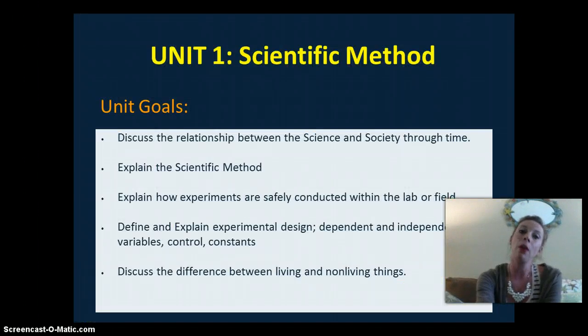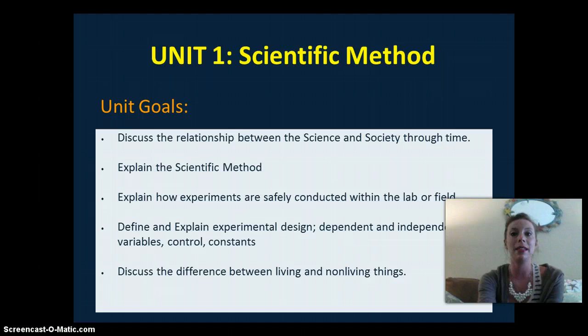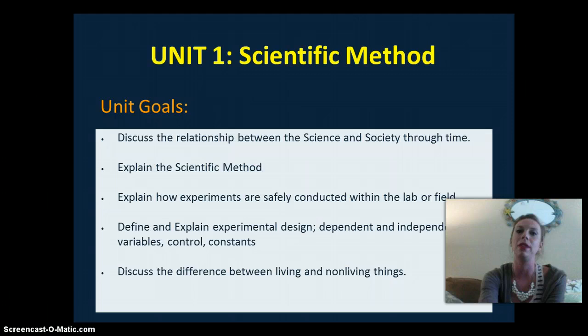The first unit that we are going to study is the scientific method. You need to be able to discuss the relationship between science and society throughout time, explain the scientific method and experimental design. So you need to know the dependent and independent variables, the controls and constants. You need to understand how scientists conduct experiments safely in the laboratory and in the field, and discuss the difference between living and non-living things.